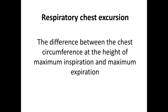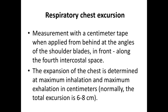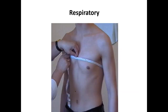Respiratory chest excursion is the difference between the chest circumference at the height of maximum inspiration and maximum expiration. Measurement is made with a centimeter tape applied from behind at the angle of the shoulder blades and in front along the fourth intercostal space. Expansion of the chest is determined at maximum inhalation and maximum exhalation in centimeters. Normally, total excursion is 6 to 8 centimeters. Here doctors measure the inspiratory and expiratory excursion phases.